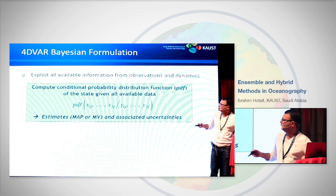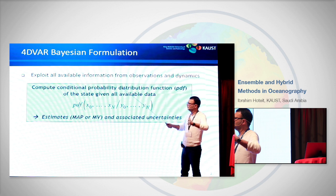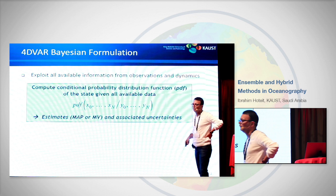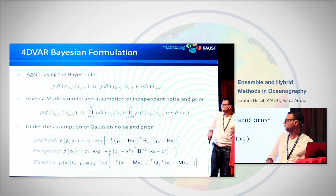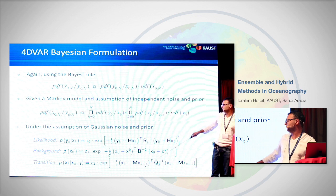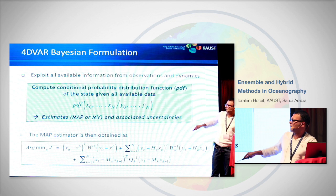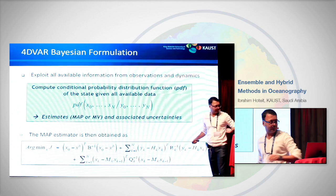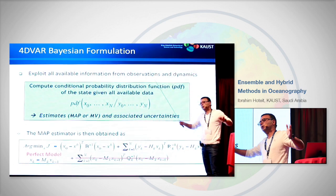Then we went to 4D var, a Bayesian formulation. Again, we want to estimate all the state of the ocean over one period, to include information from dynamics and from all available data. Based on prior conditional distributions, assuming the likelihood is Gaussian and the model error is Gaussian, we end up with the 4D var cost function, which is basically the 3D var — the only difference being that we compute model minus data over a window, assuming a perfect model.